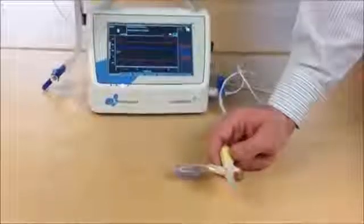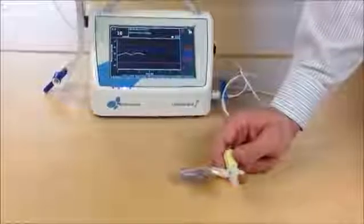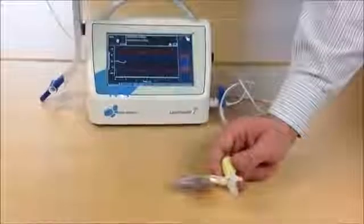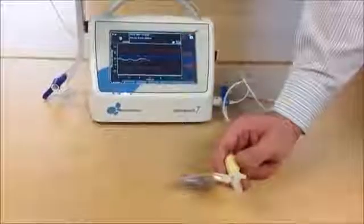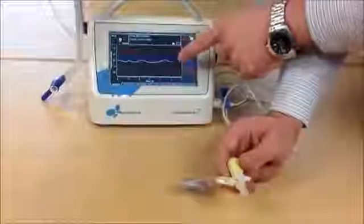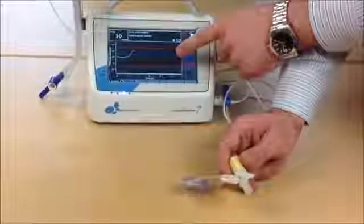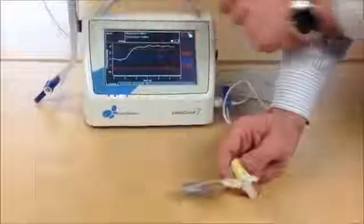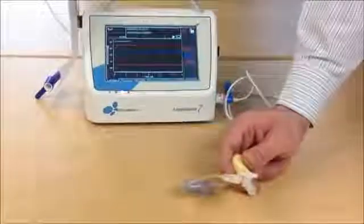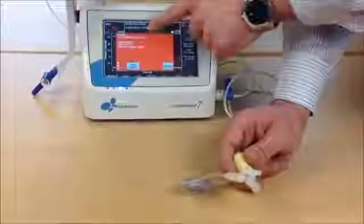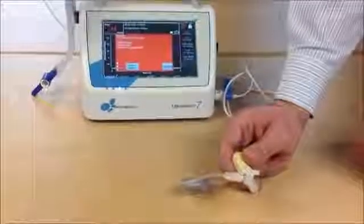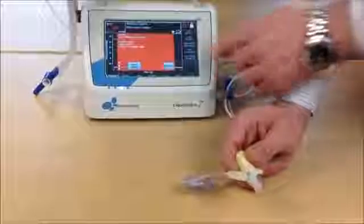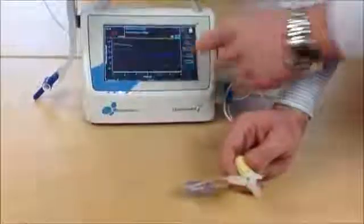The next alarm situation is a high pressure alarm. I can generate some high pressure by pressing this ball. Have a look at the white curve. Now the pressure goes up. The figure goes to red. And we hear an alarm saying the pressure is too high, indicating possible alarm causes.